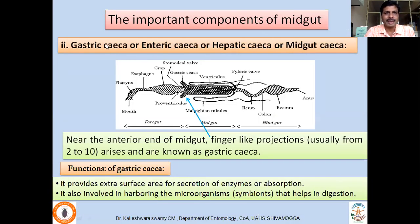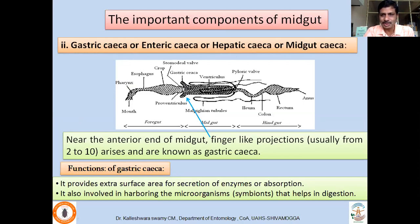The second important part of the midgut is the gastric caeca, also called enteric caeca, hepatic caeca, or midgut caeca — finger-like projections whose number varies from 2 to 10 in generalized insects. Their main function is to increase the surface area of the midgut and release large quantities of digestive juices while aiding absorption of nutrients. Sometimes these gastric caeca harbor microorganisms called symbionts that assist in the digestion process.